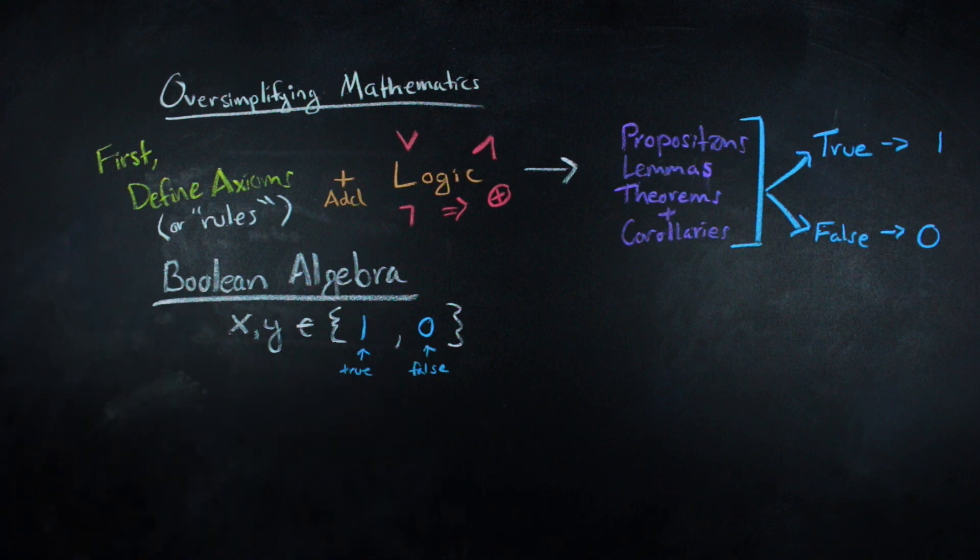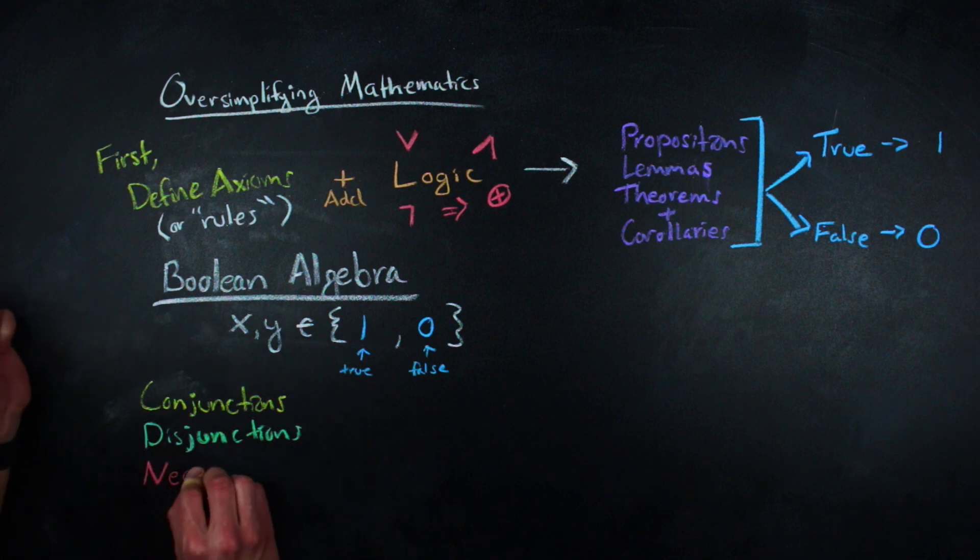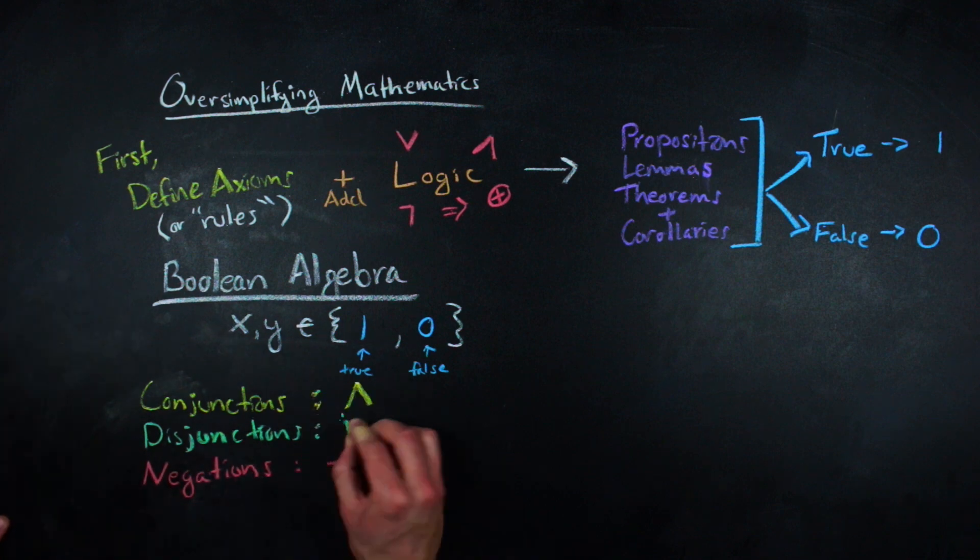And instead of having addition and multiplication as the primary operations, we have what are called conjunctions, disjunctions, and negations.